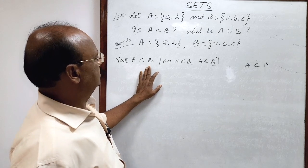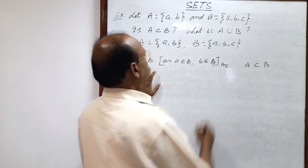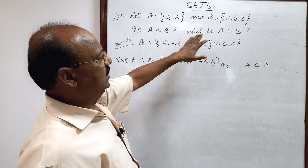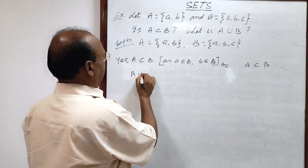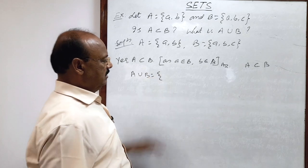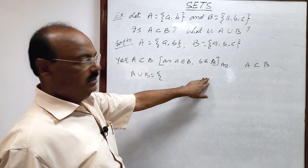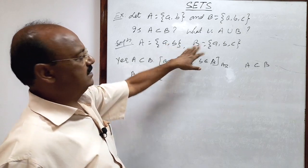This is the answer for the first part. The second part is: what is A union B? We can find A union B by keeping all the elements from both sets A and B.